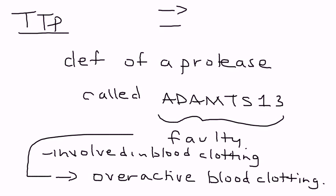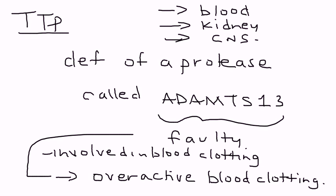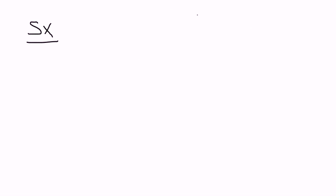The unfortunate part about TTP is that it can affect not only the blood, but it can also affect the kidneys and the central nervous system. The symptomatology is known as a classic pentad, meaning there are five things that happen.